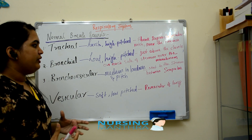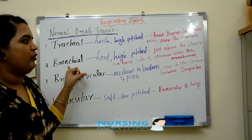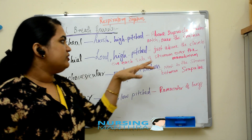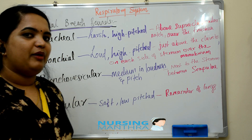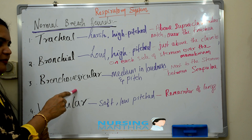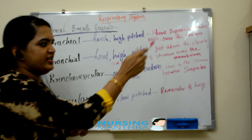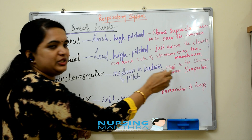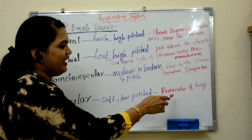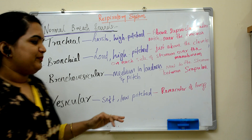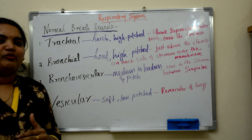Bronchial sound is loud and high-pitched, heard just above the clavicle on each side of the sternum, over the manubrium. Bronchovesicular sound is medium in loudness and pitch, heard next to the sternum and between the scapulae. Vesicular sound is soft and low-pitched. These are the normal breath sounds.